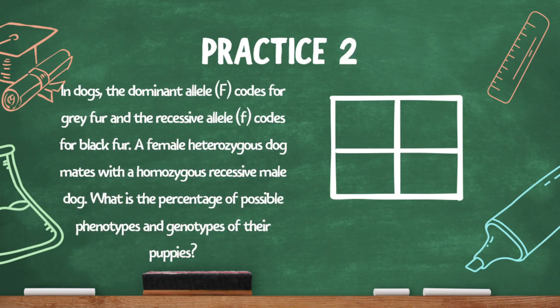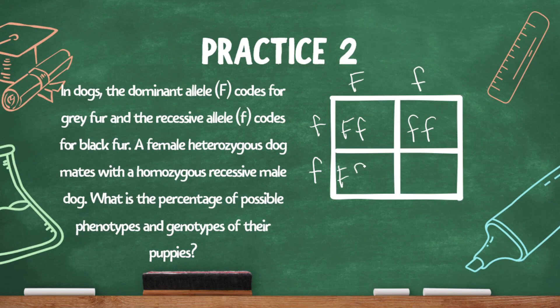Let's do another practice question. Remember to pause the video if you want to give it a try on your own. In dogs, the dominant allele big F codes for gray fur and the recessive allele little f codes for black fur. A female heterozygous dog mates with a homozygous recessive male dog. What is the percentage of possible phenotypes and genotypes of their puppies? So the heterozygous female is big F, little f, and the homozygous recessive male is little f, little f. Completing the Punnett square gives us: big F, little f; little f, little f; big F, little f; and little f, little f. This one looks like the one we did last.